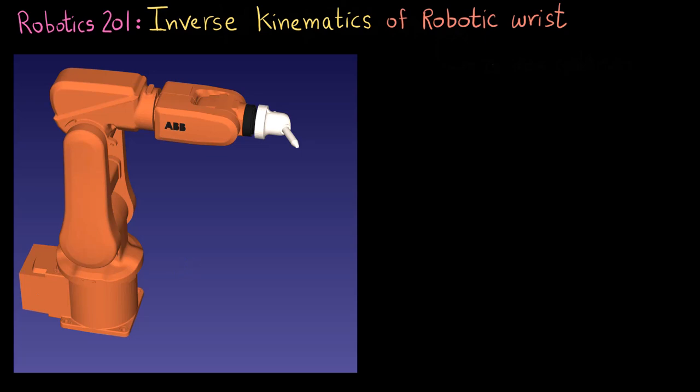So this is one of the intersecting axes of the robot which is theta 4. So the robot can rotate about this axis. So there is going to be a motor which rotates about this.